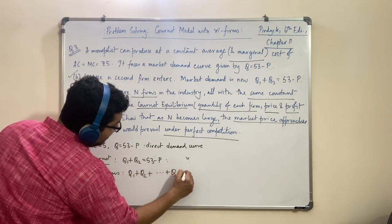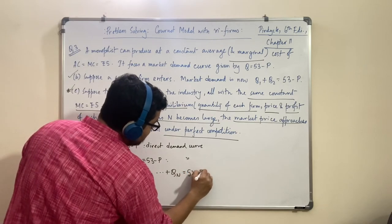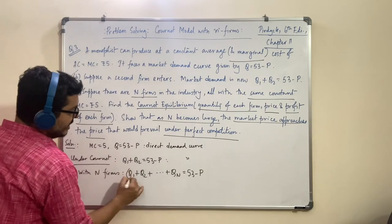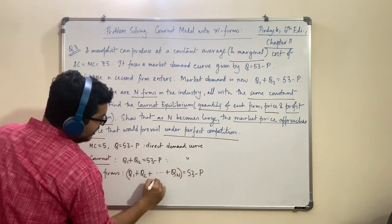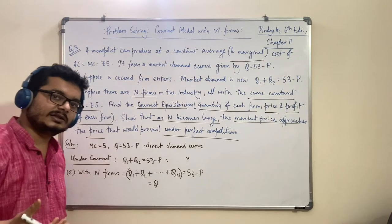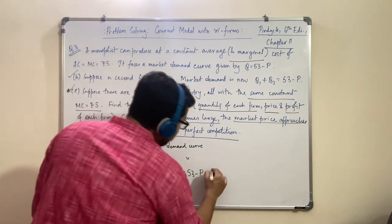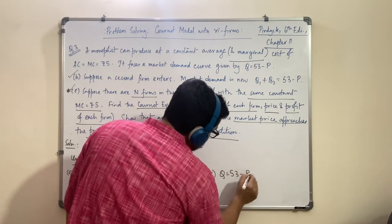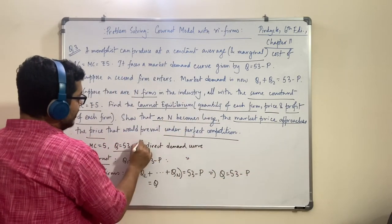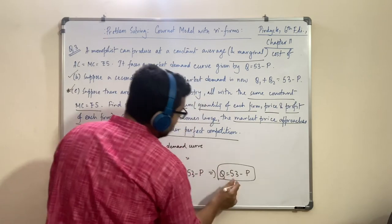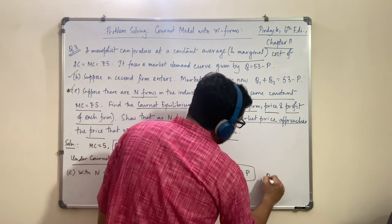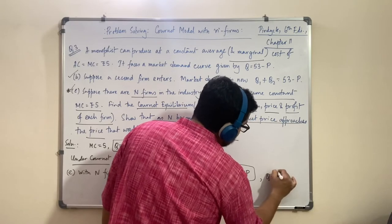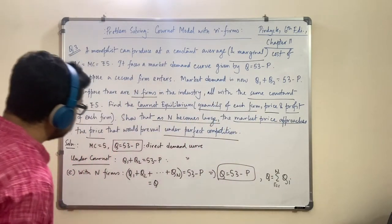So in this solution we are going to solve the optimization problem of firm 1, and then use the symmetry argument again — that the reaction function of firm 1 will be identical to all others. You can also write: arbitrarily I take i equal to 1. The reason for writing this is so that no one can ask what would happen if you had taken 2 or 3 or anything else.